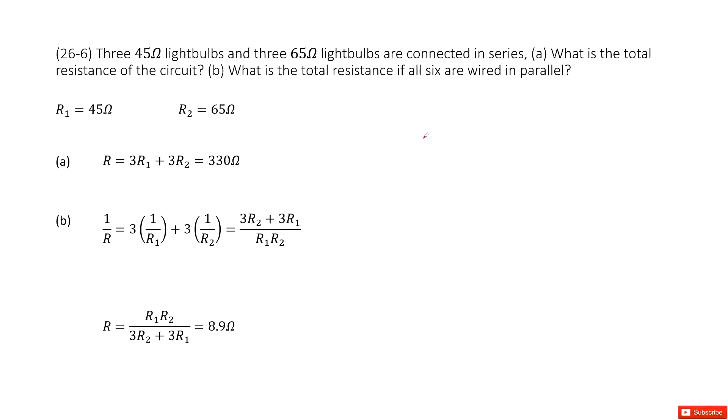We can see we have three light bulbs with resistance R1 equals 45 ohms, and three light bulbs with resistance R2 equals 65 ohms, connected in series. First, we need to know what is the total resistance of the circuit.